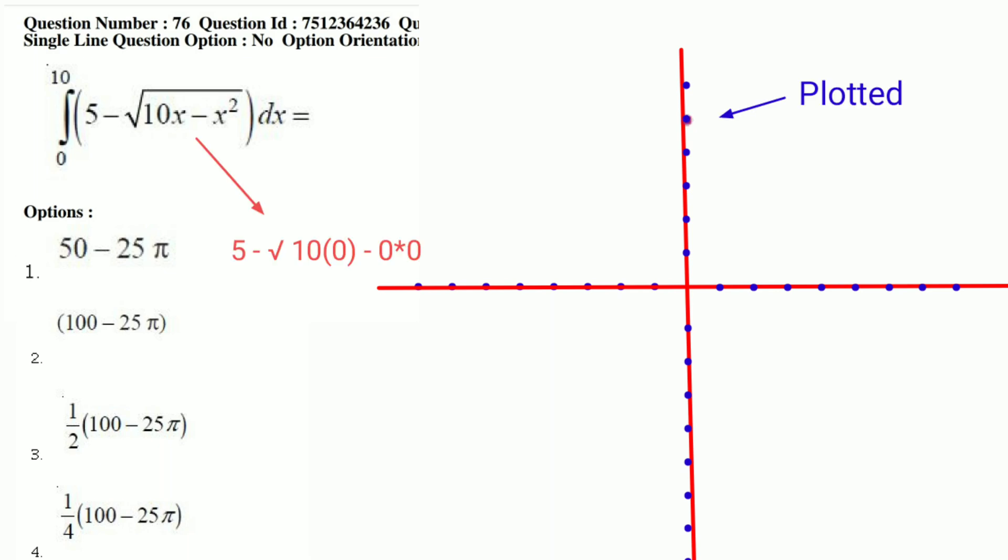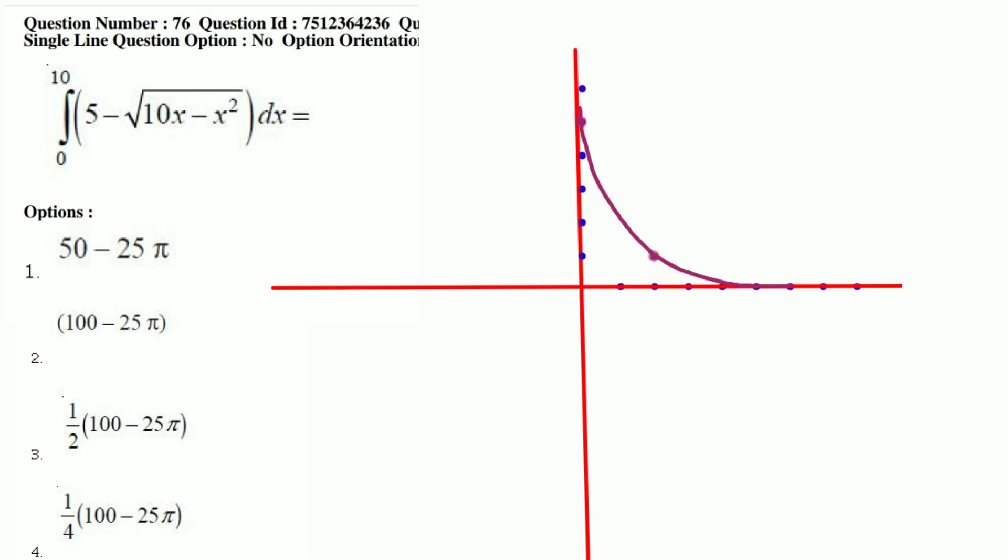This is 5 minus root of 10x minus x squared. First, this 10x minus x squared equals zero when x is 0 or 10. When x is 5, we get 5 minus root of 25, which is 0. So the curve touches the x-axis at x equals 5. This is a parabola, a quadratic that touches the x-axis at 5. If you have doubts about values, check: at x equals 8, we get 5 minus 4 equals 1.